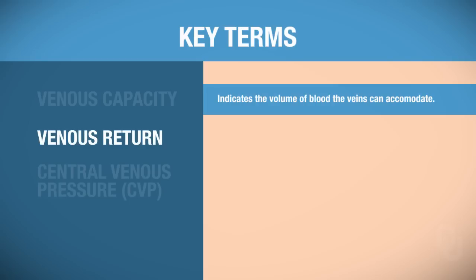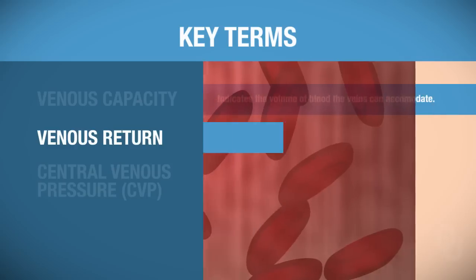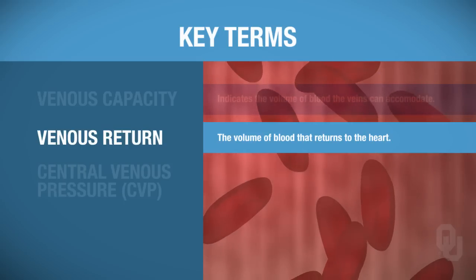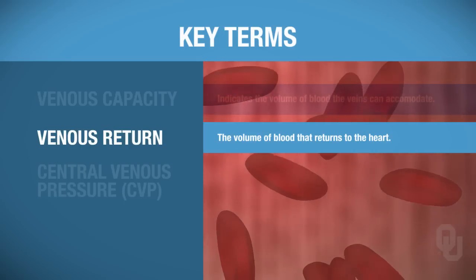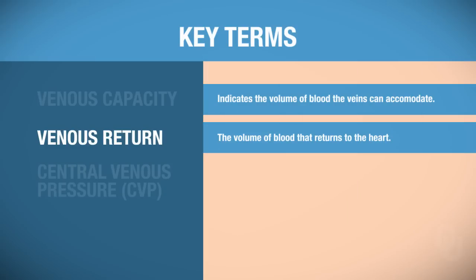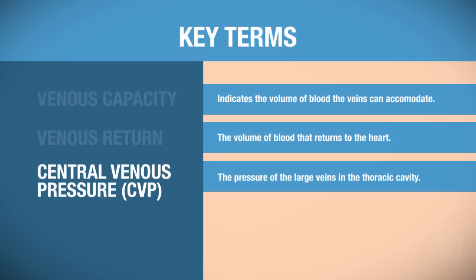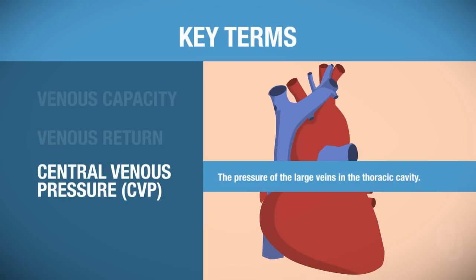Now let's focus on venous return. Venous return is the volume of blood that returns to the heart. Finally, central venous pressure, or CVP, is the pressure in the large veins of the thoracic cavity — this would include the inferior vena cava and the superior vena cava.